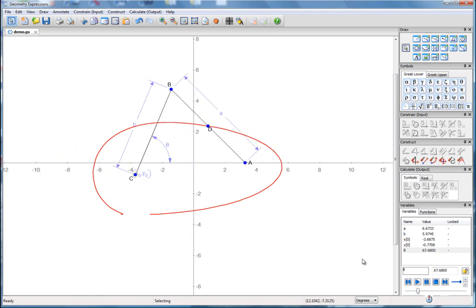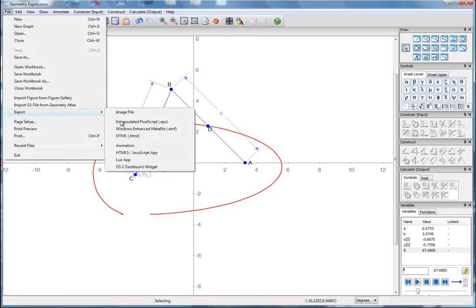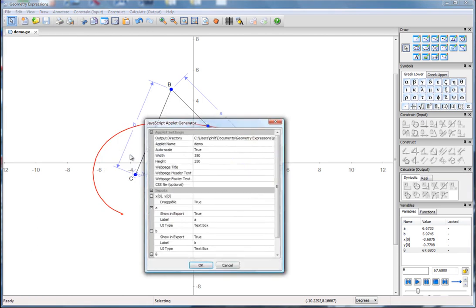And so what we're going to do by exporting an app is we're going to replicate the same thing, but we're going to do it in a way that can be shared with anyone. So we're just going to go to File, Export, HTML5 slash JavaScript app.